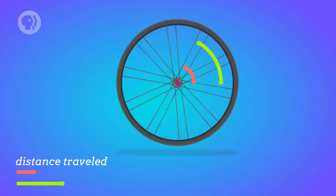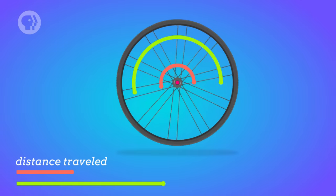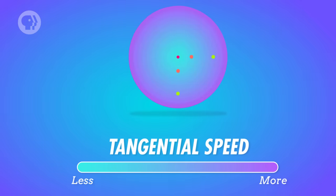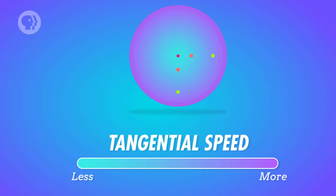the points on the outside of the wheel will pass through a much bigger arc, covering more distance, basically, than the points on the inside. So the further that a point on the spoke is from the center of the wheel, the greater its tangential velocity has to be.